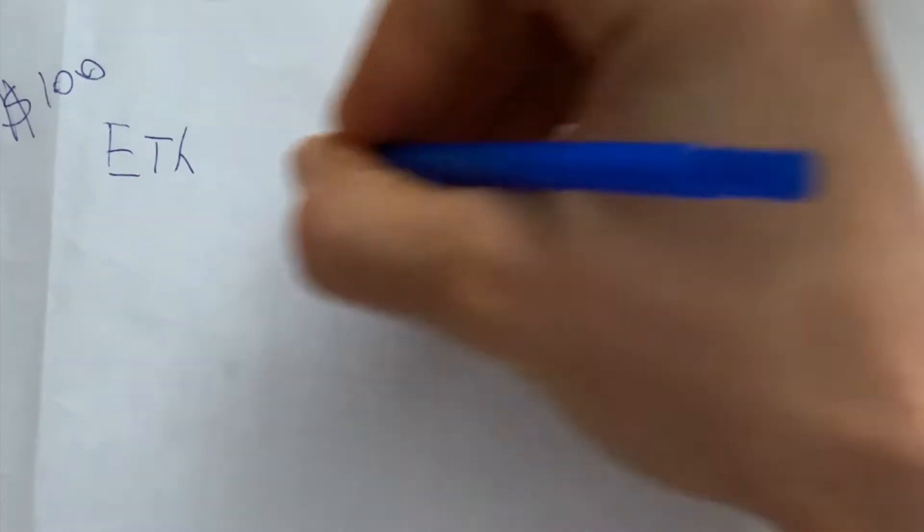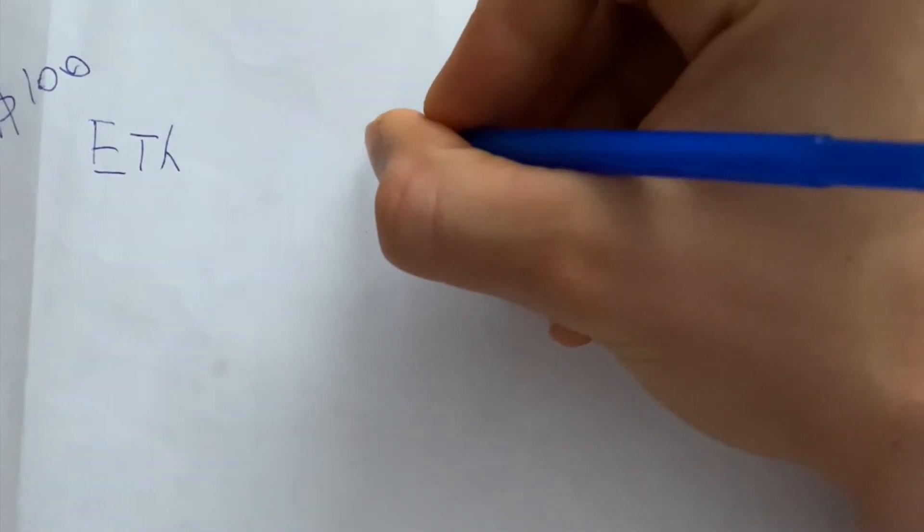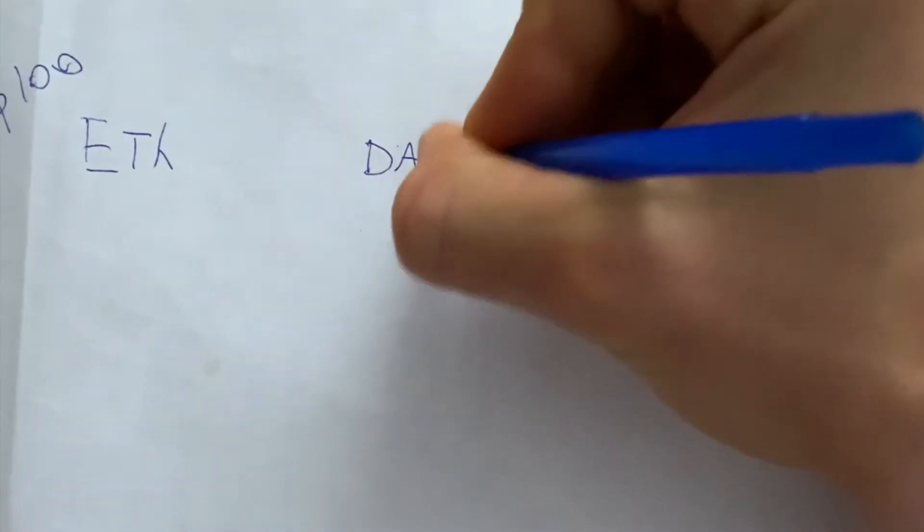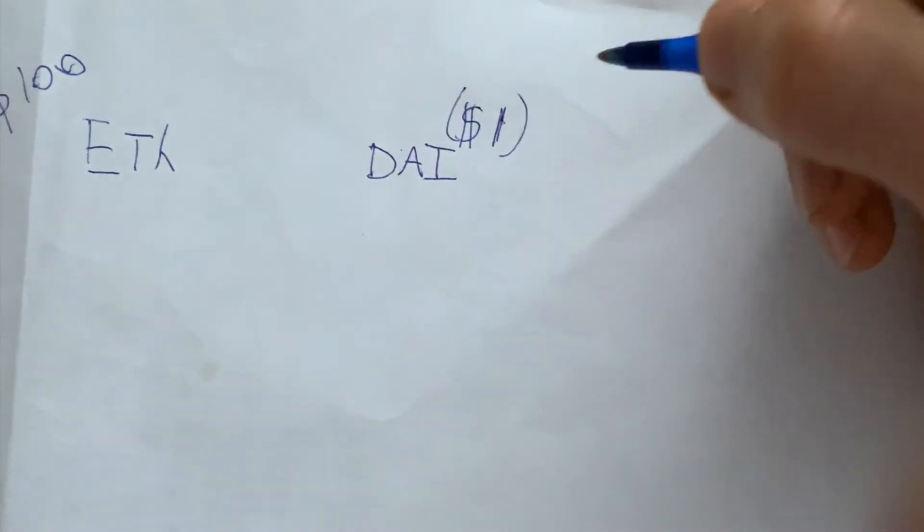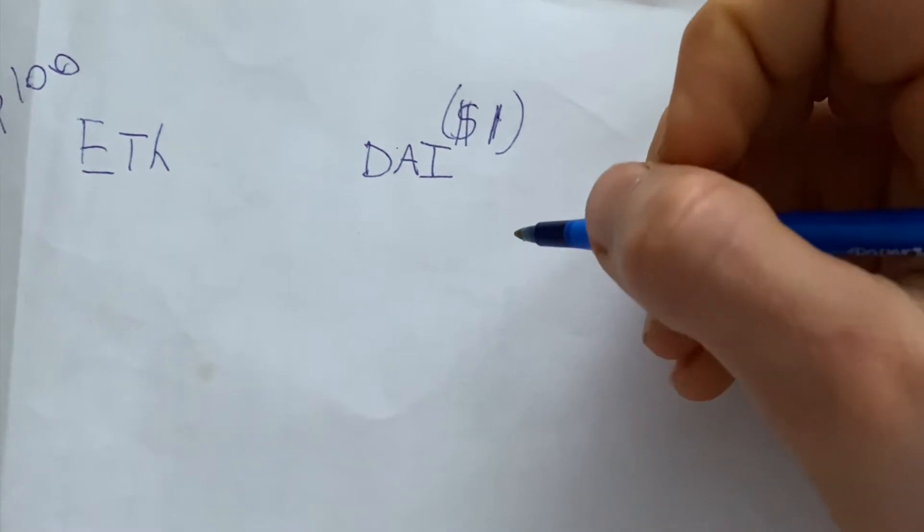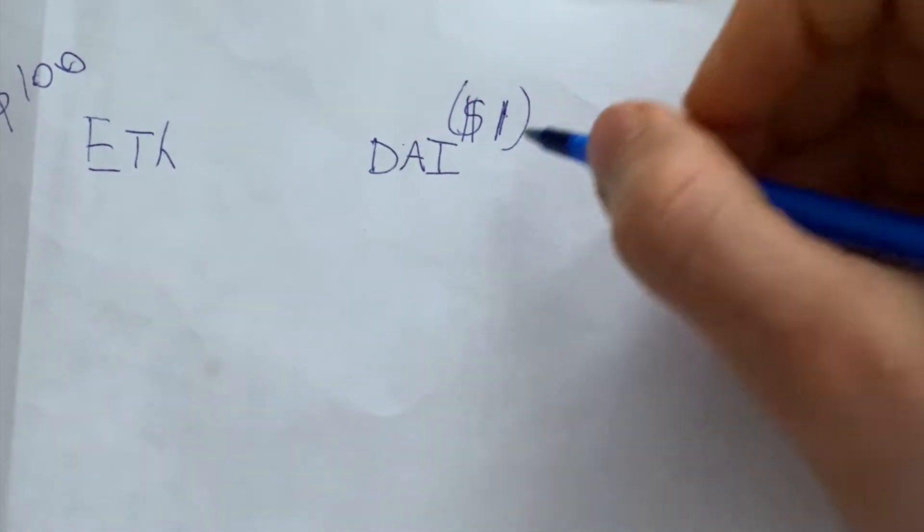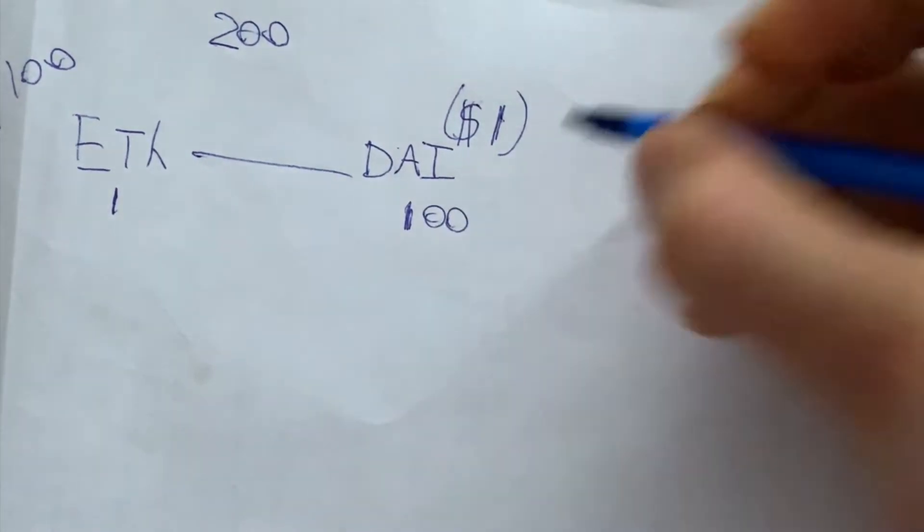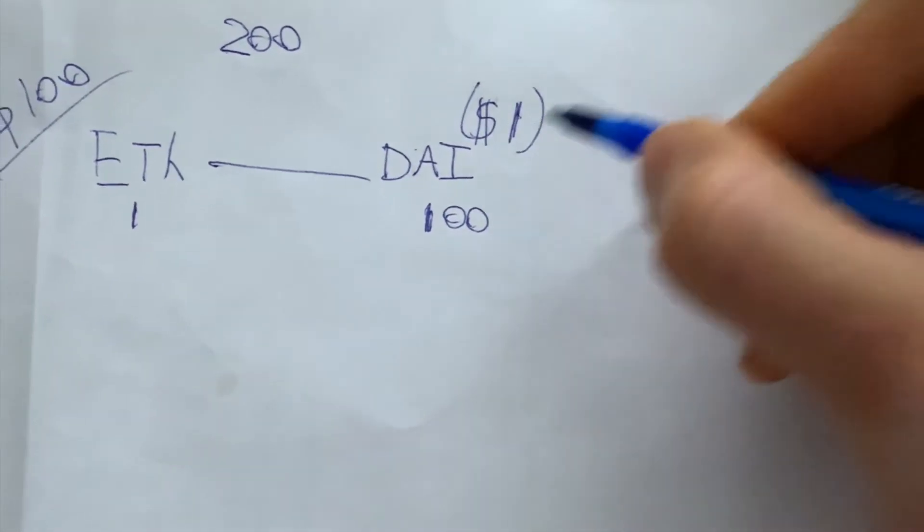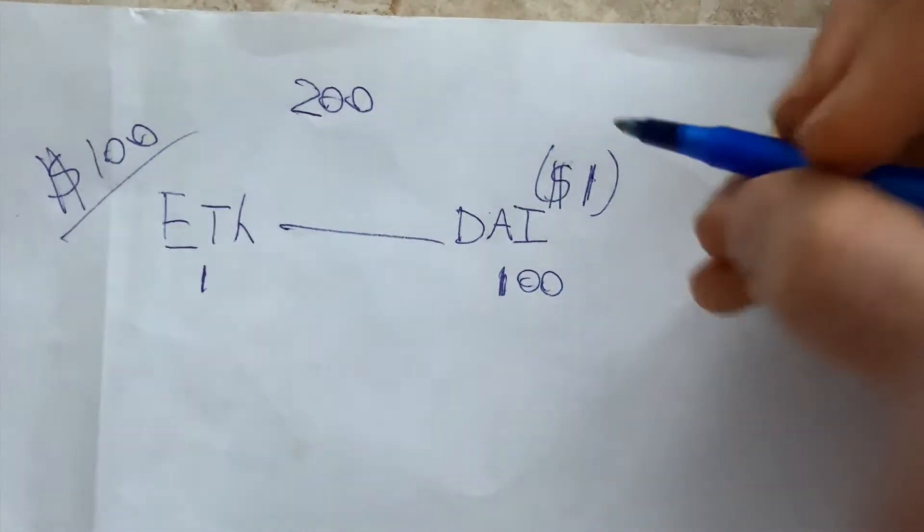So now you have the other token, which is the other side of the liquidity, which is DAI. DAI tries to stay at $1, but you and I both know it pretty much doesn't. It's usually like $1.01, $0.99. Anyways, so our pool is $200. That means we deposit one ETH, 100 DAI, because one ETH is $100 and one DAI is obviously $1.